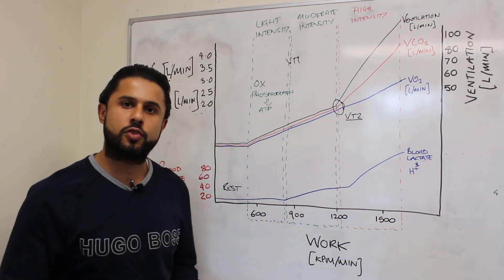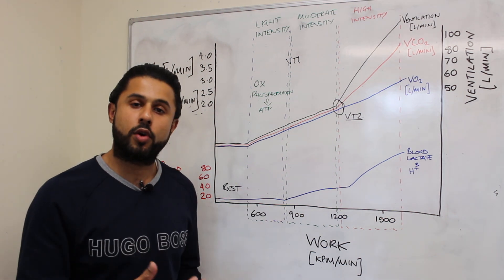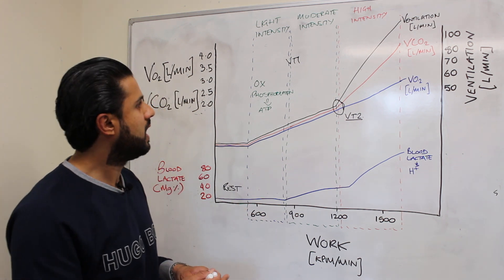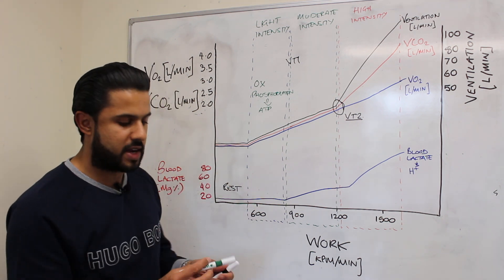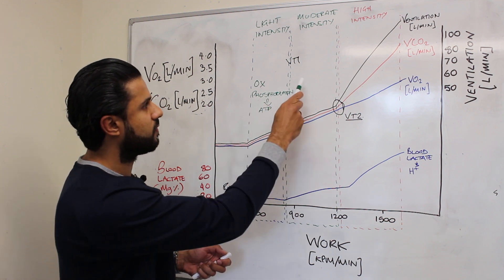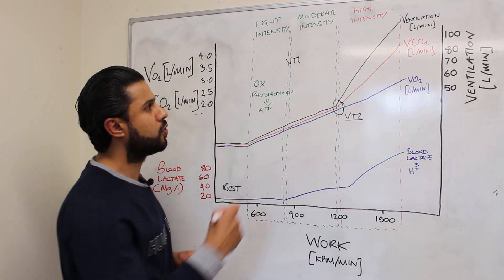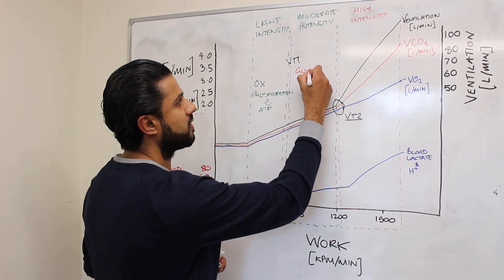Now the runner decides to increase the tempo of his run or he may encounter a slight incline so his muscles are now working harder. Now what happens in this phase is that we're still using oxidative phosphorylation to produce ATP but we start to rely a little bit upon glycolysis.